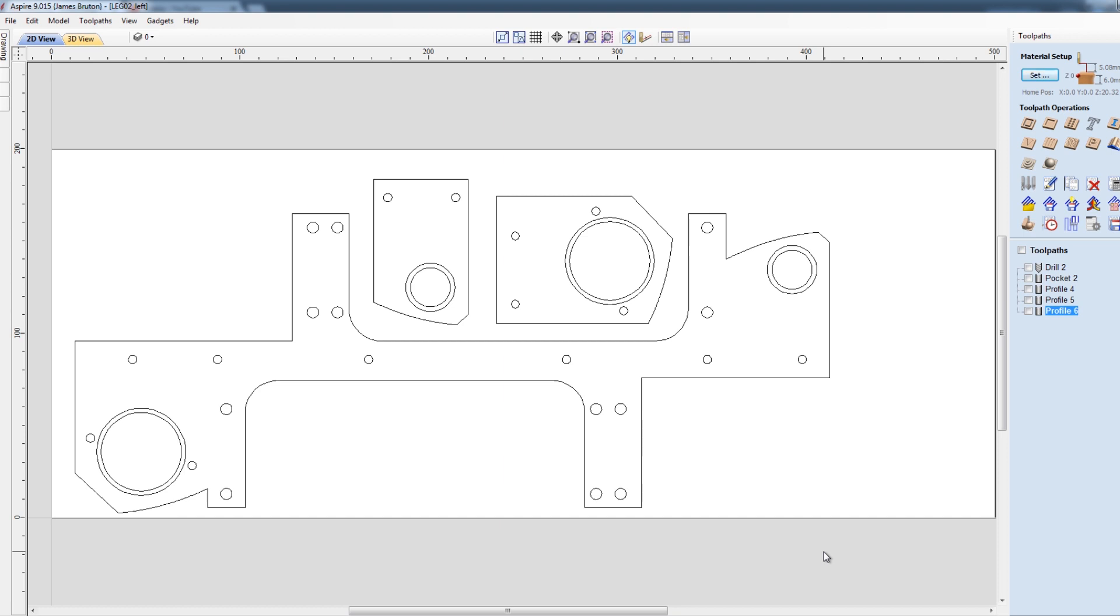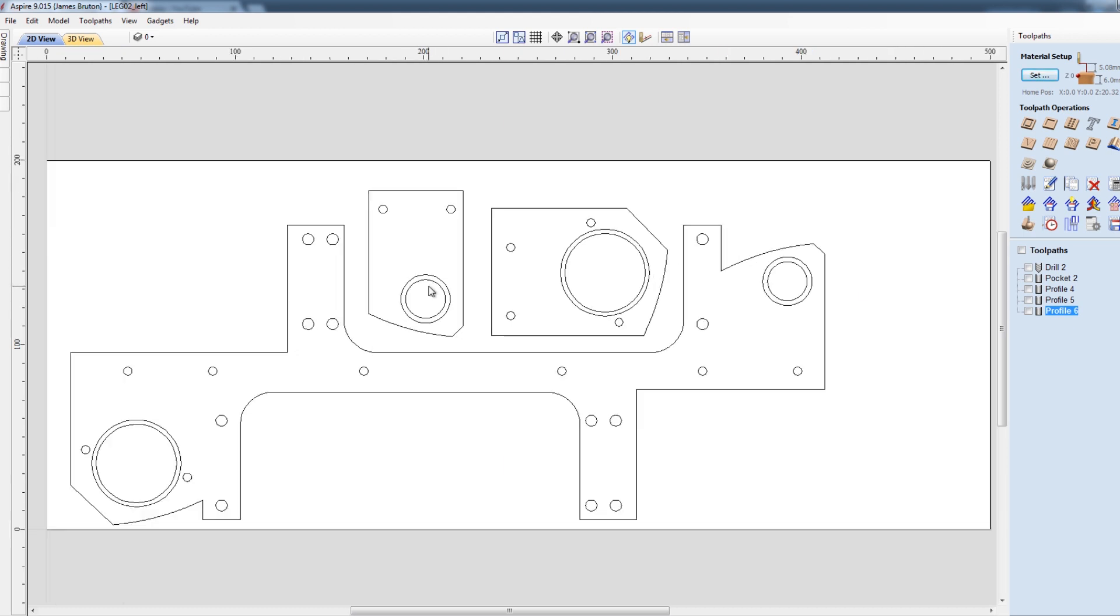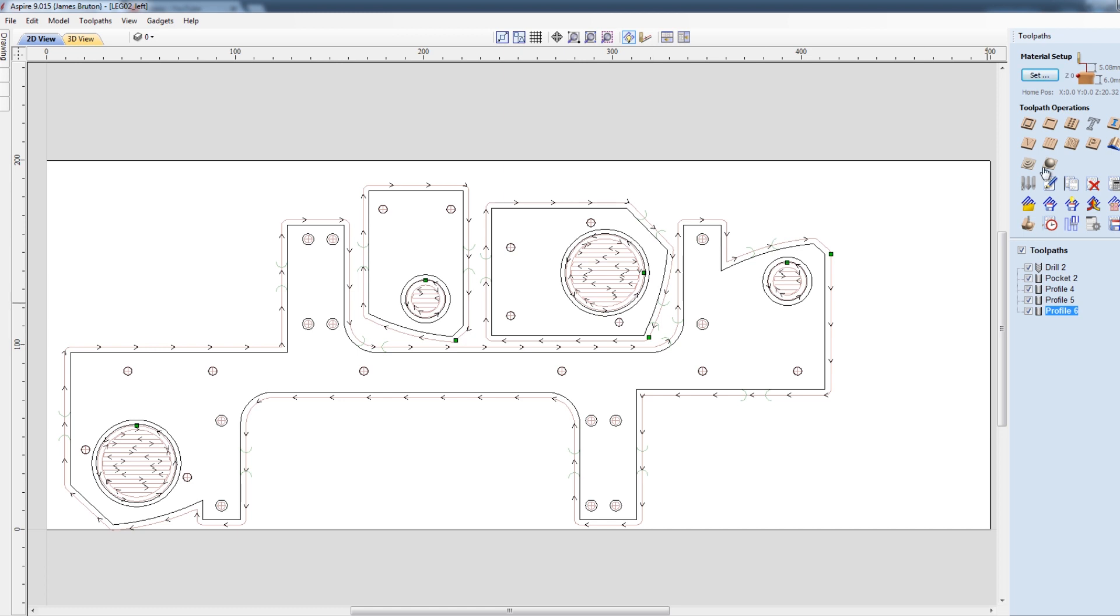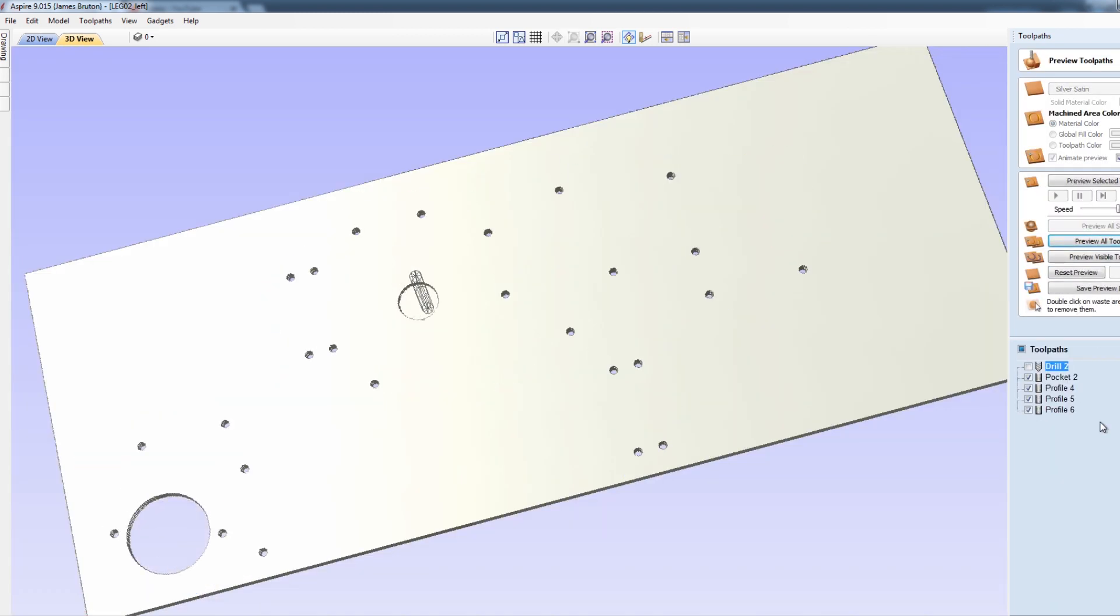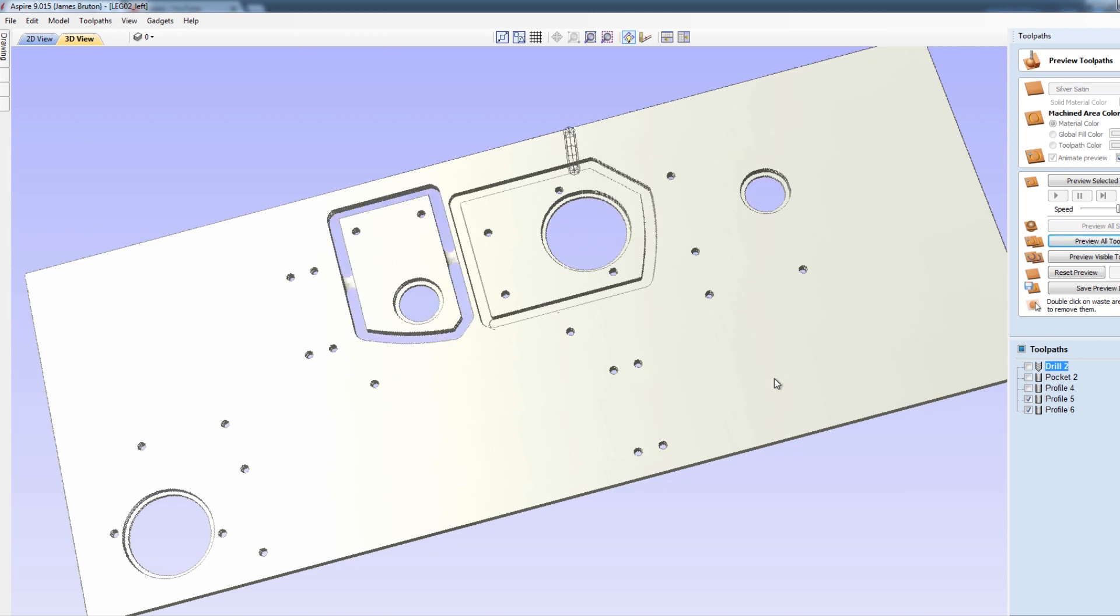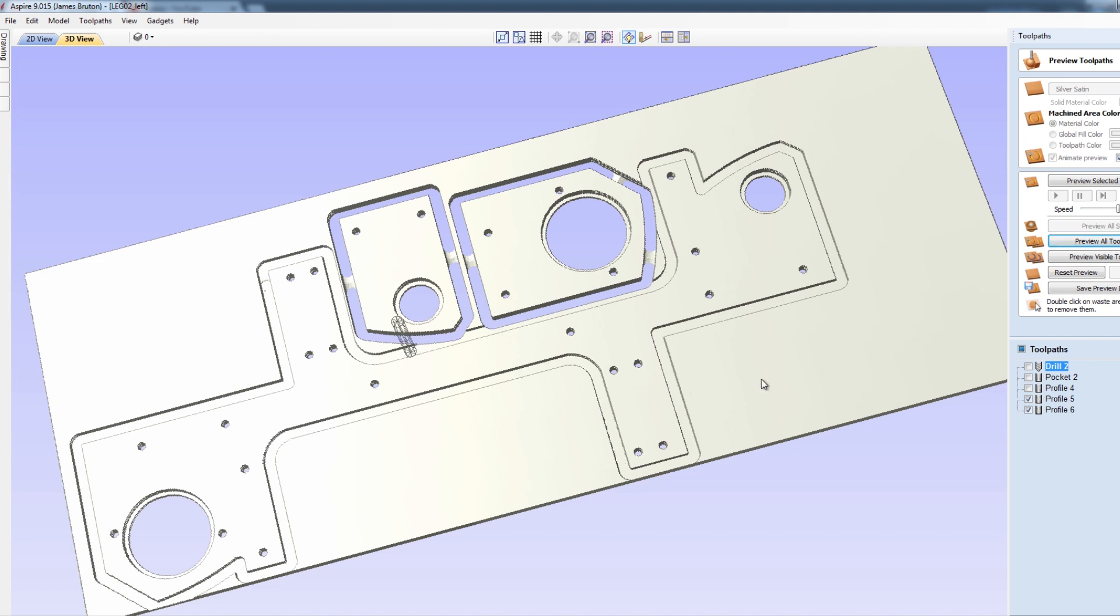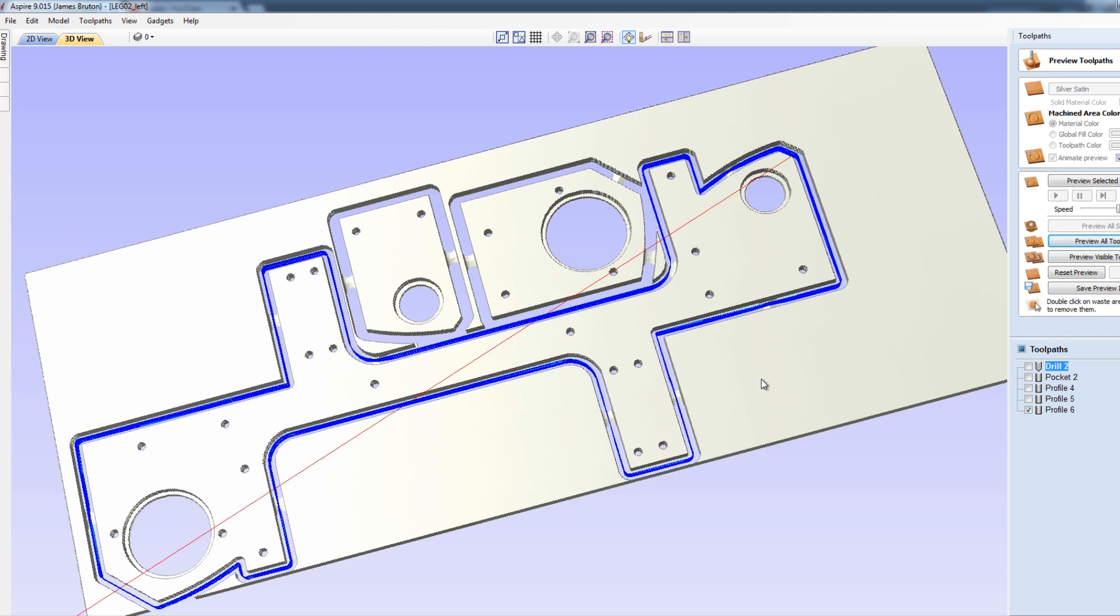So as usual, we're using Vectric Aspire to plan our toolpaths here. So these are our pieces and the white area there represents the piece of aluminum I've got. So of course we've got various different toolpaths and we can run that simulation. So that shows us exactly where it's going to cut. We're going to be clearing these big holes and of course leaving that ledge around the edge for the bearing to rest in there. And then cutting the rest out with a profile cut and leaving some tabs here so the pieces don't fly off.